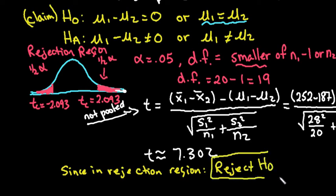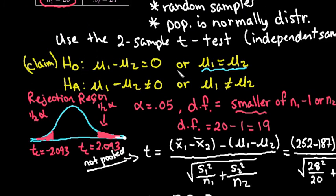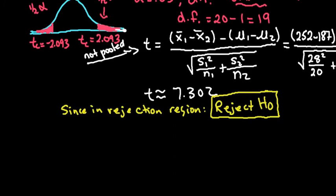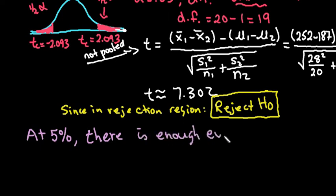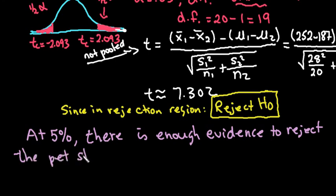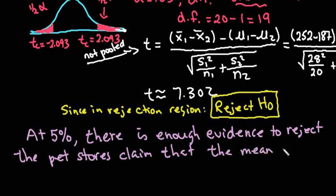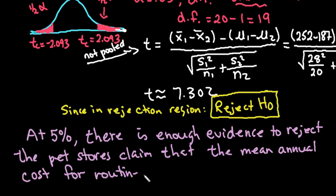Since we rejected the null hypothesis, our conclusion is: at the 5% significance level, there is enough evidence to reject the pet store's claim that the mean annual cost for routine vet visits is the same for cats and dogs.